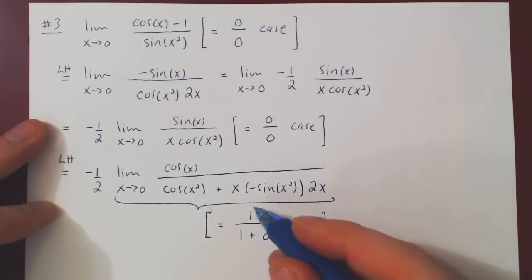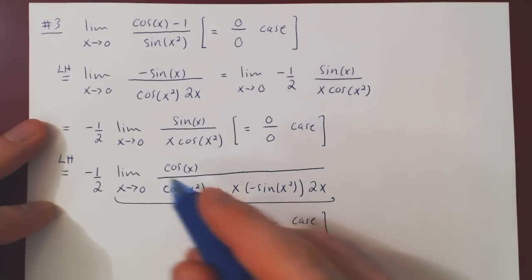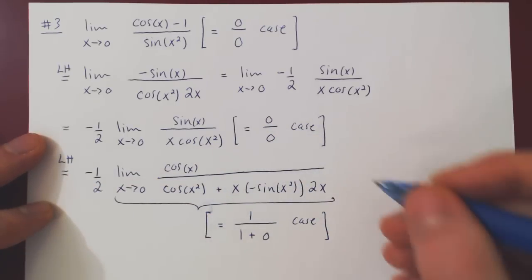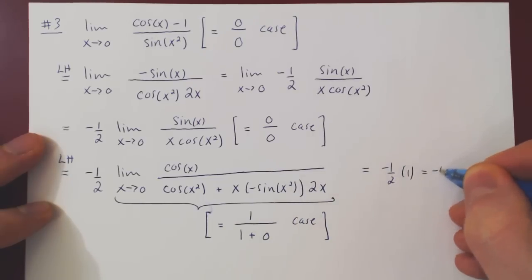So we have a very simple case, 1 over 1 plus 0, 1 over 1, so this limit converges to 1, or I should say is equal to 1, and so we're left with negative 1 half times 1, which is of course negative 1 half.